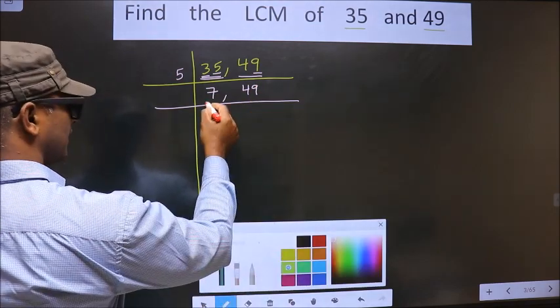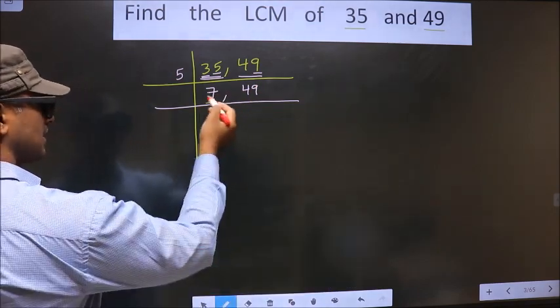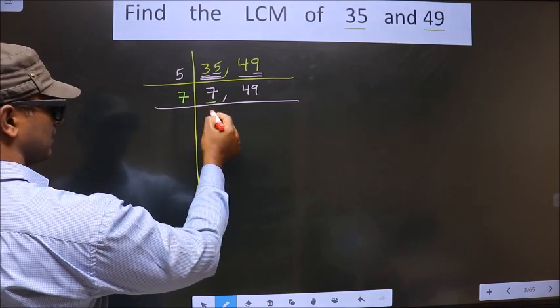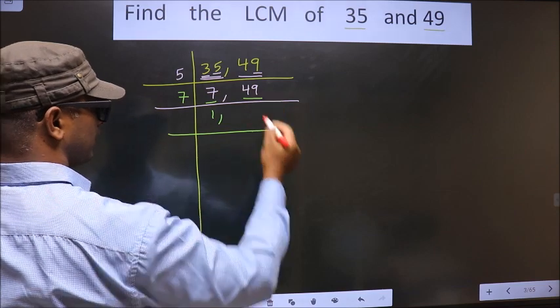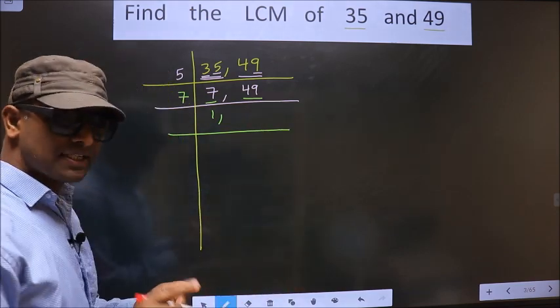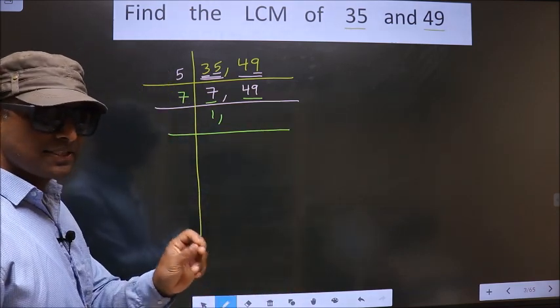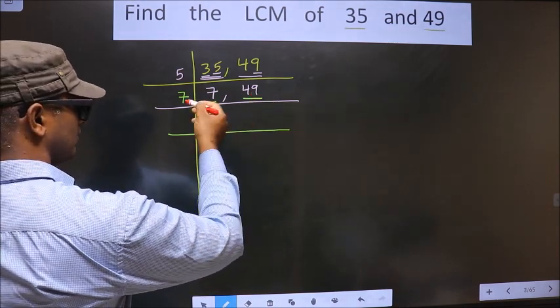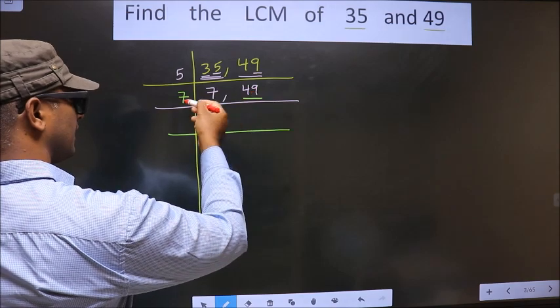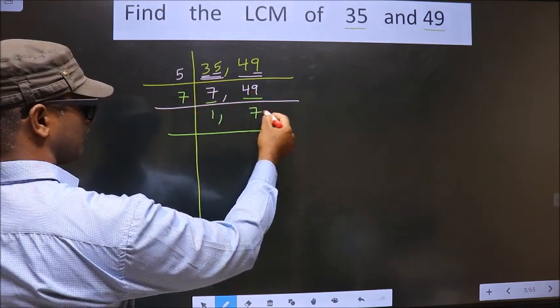Next, here we have 7. 7 is a prime number, so we take 7 once. The other number is 49. Always remember, 7 squared is 49, so this is divisible by 7. When do we get 49 in the 7 table? 7 times 7 is 49.